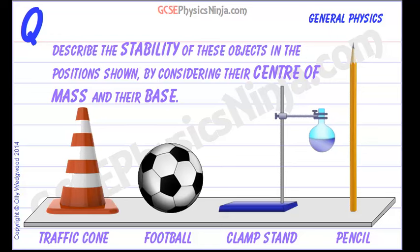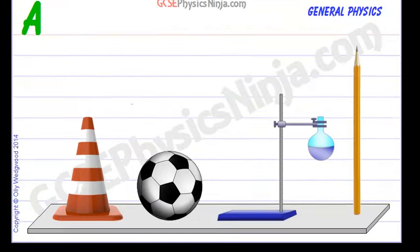There are three types of stability of objects. We have four objects here: a traffic cone, a football, a clamp stand with a flask of water that has been clamped on the wrong side of the clamp stand, and an upright pencil. When we consider stability of objects we must always talk about where the centre of mass is and how wide the base of the object is. Let's take a look at an illustration to show what's going on with stability.